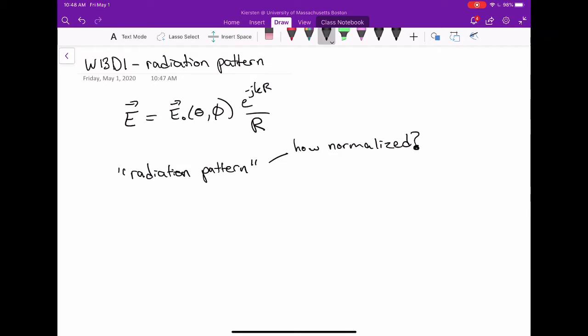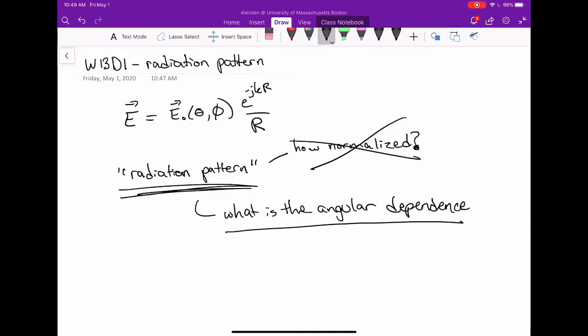And there are a lot of different things that they could be referring to, but really what they would just want to know is what is the angular dependence of the radiation from that antenna? So it's not really a specific technical term.